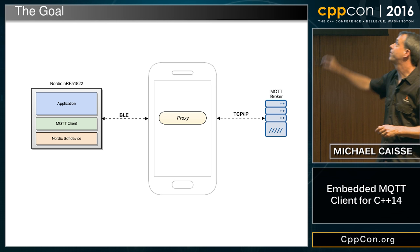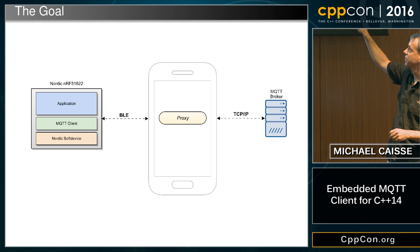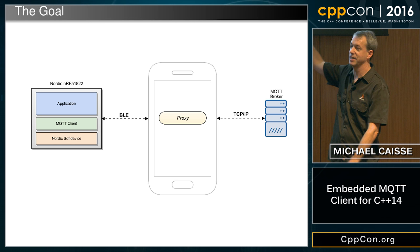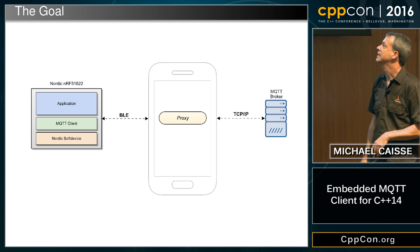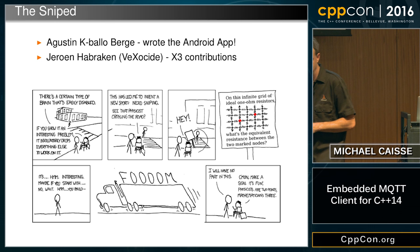My job now was to figure out if I could drop in this C++ MQTT library and have it work — wedge it in so the application, which was C, could compile under a C++ compiler without being too intrusive on what the original thing looked like. For the bit in the middle, we'd write a proxy — Bluetooth proxied over TCP to an MQTT broker and back. I got some help from Augustine and Yeroen, who I call 'being sniped' into helping.